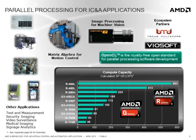While the AMD G-Series SOC has a high-performance graphics processor great for applications that require graphics, there are many industrial applications that can benefit from the compute capability of the GPU, which ranges between 85 and 185 gigaflops of single precision compute capability. Applications like machine vision can use it for image processing; it can be used for high-speed matrix algebra and motion control, or for fast Fourier transforms and curve fitting in test and measurement.